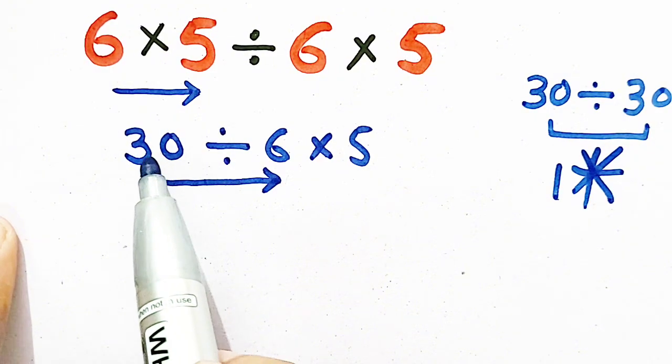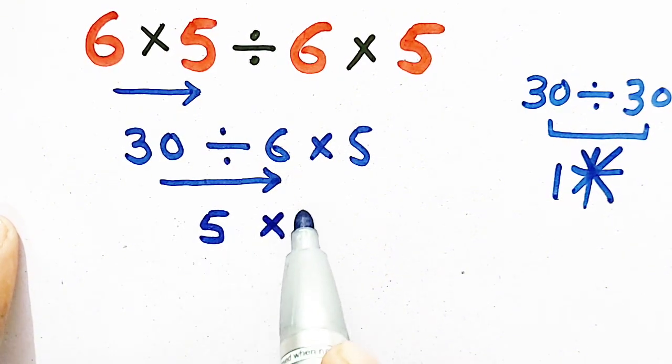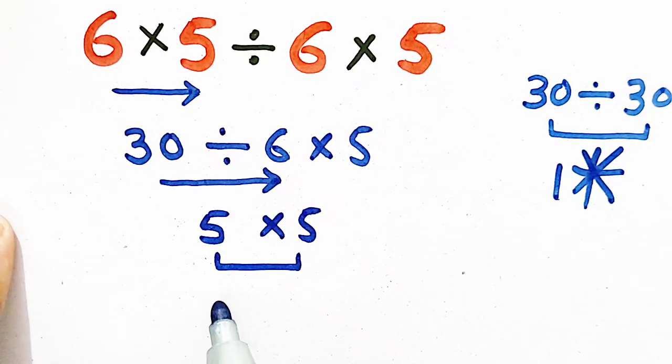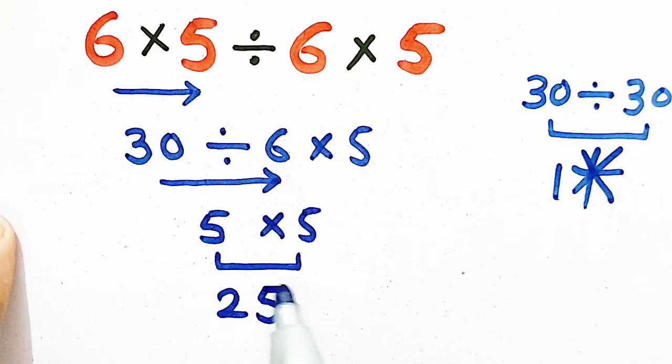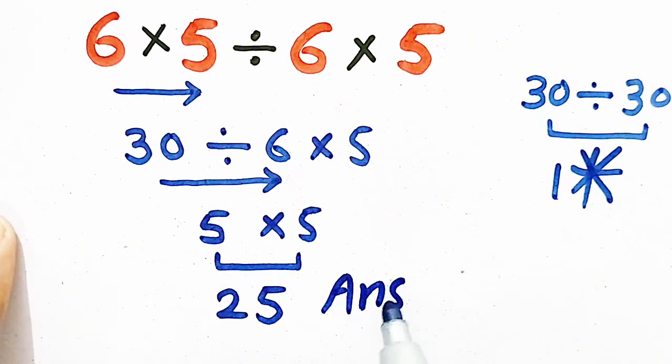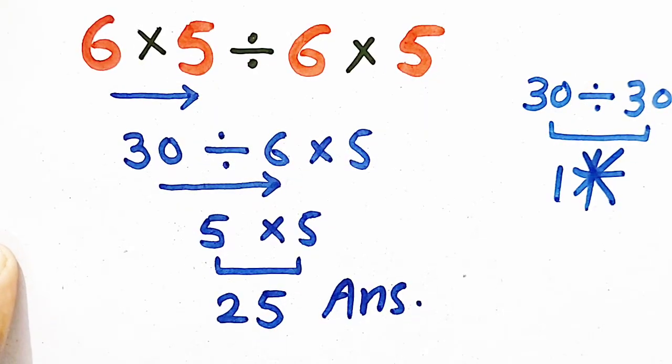First of all, we have to divide 30 by 6, which will be equal to 5×5. Now, 5×5 will be equal to 25, which is our correct answer. Thank you for watching and subscribing my YouTube video.